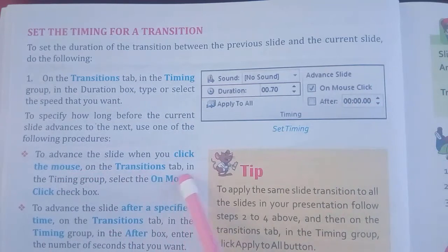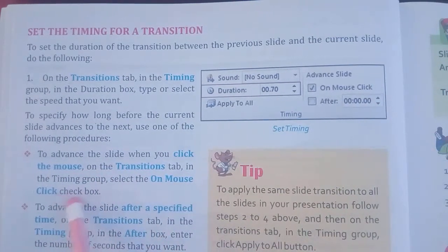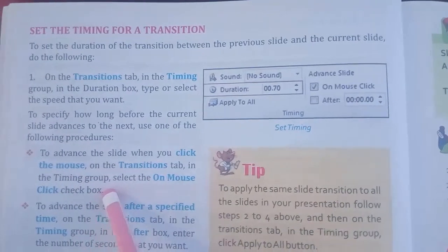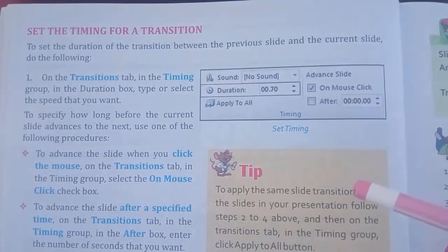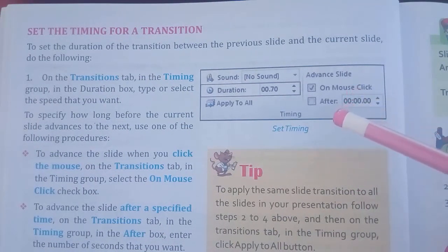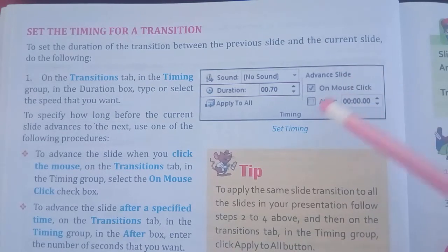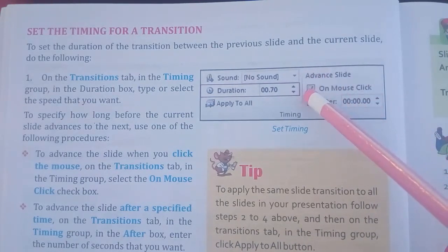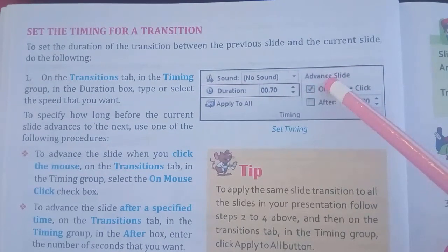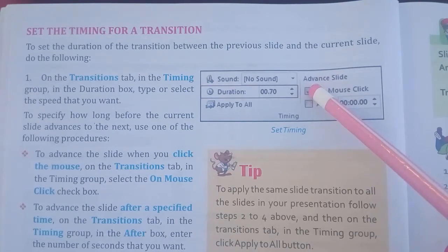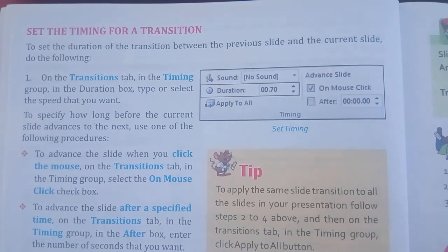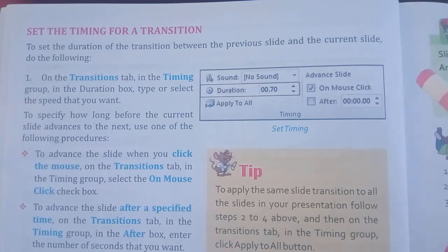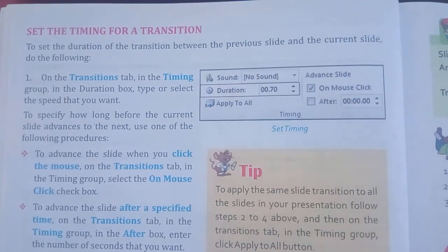To advance the slide when you click the mouse: on the Transition tab, in the Timing group, select the On Mouse Click check box. This means when you are on one slide, you can click to advance to the next slide using the mouse button.